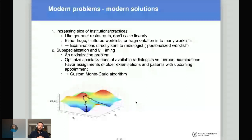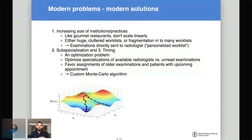We viewed this as an optimization problem, basically optimizing between the available radiologists on one side and the unread examinations on the other side. We implemented a custom Monte Carlo algorithm. Conceptually, the surface you see here represents the difference between two distributions: red means fewer exams read by the appropriate sub-specialized radiologist, blue means more sub-specialized exams going to specialized radiologists. You throw a bunch of marbles in and look which marble lands on the lowest point — that's your ideal assignment.